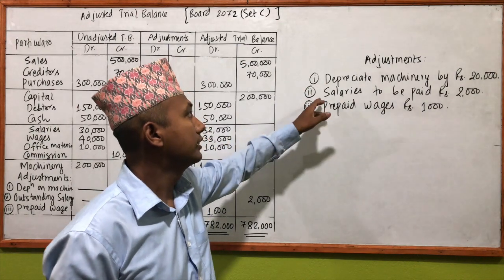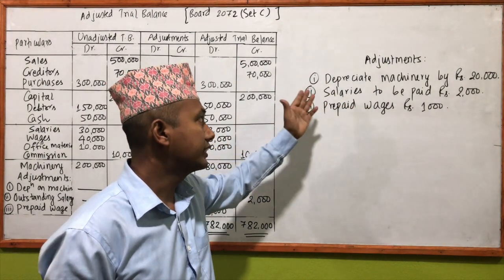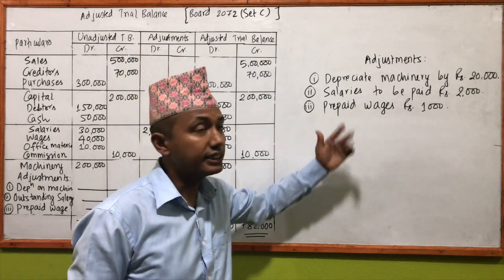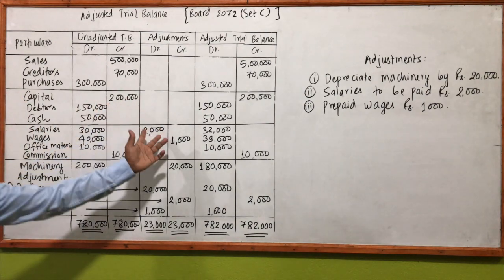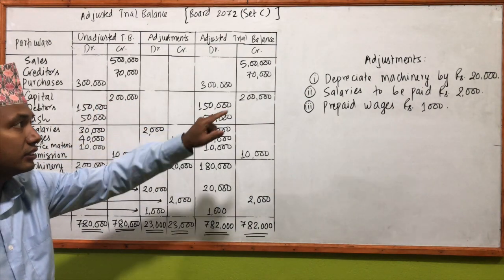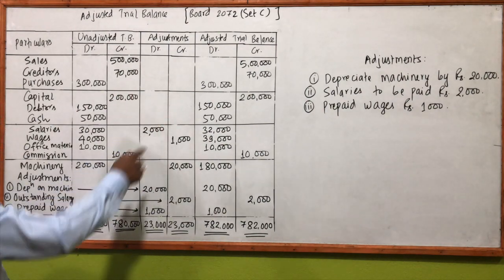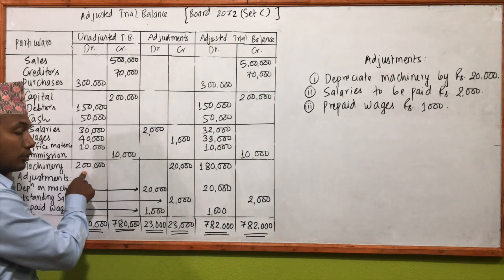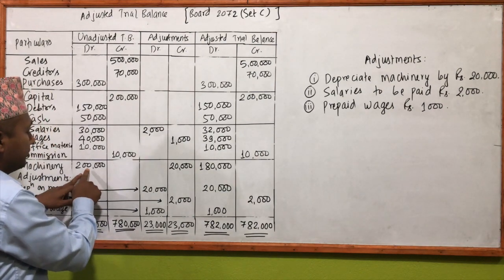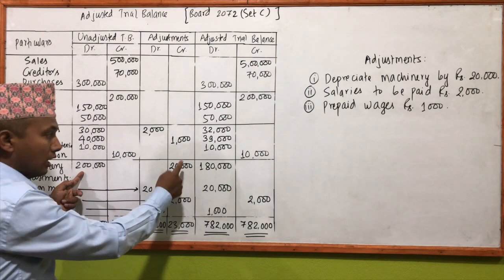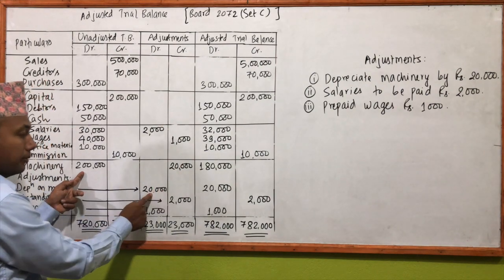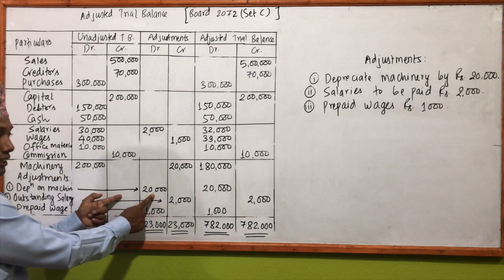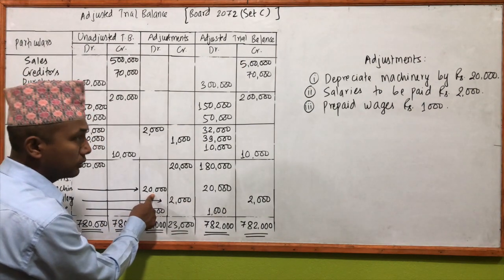The adjustments are: depreciation on machinery, outstanding salary, and prepaid wages. First, depreciation of 20,000 rupees on machinery — we look at the machinery figure, and the machinery is credited for depreciation. Second, salaries to be paid by 2,000 — outstanding salary.